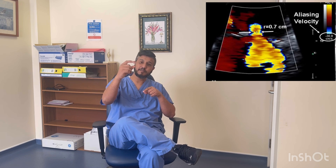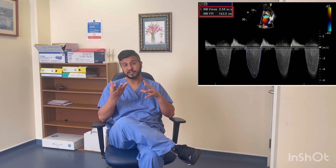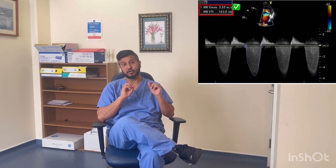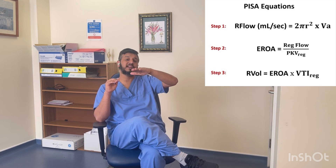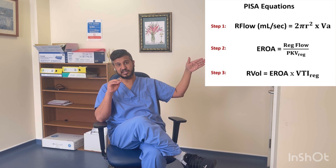In the PISA calculation, you measure the PISA radius, and the machine then asks you to measure the VTI of the regurgitation jet. When you trace the VTI, the machine automatically detects the peak velocity — it actually needs the peak velocity for the ERO calculation. The reason the machine asks for the VTI is so it can automatically calculate the regurgitation volume as well: it detects the peak velocity to calculate ERO, then multiplies by the VTI.